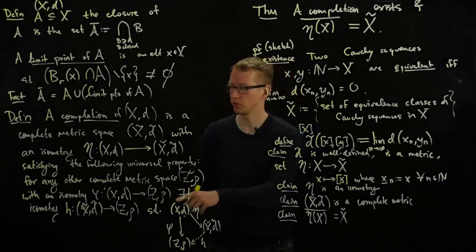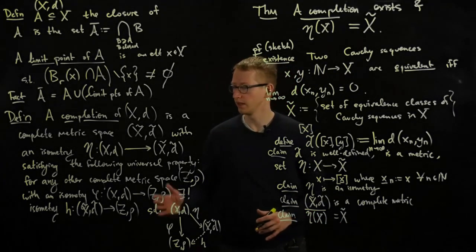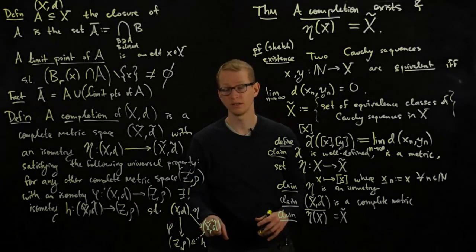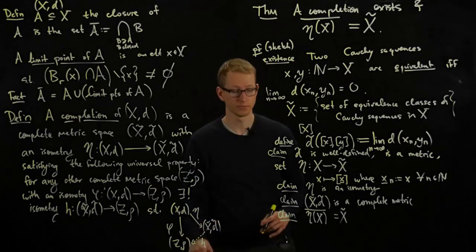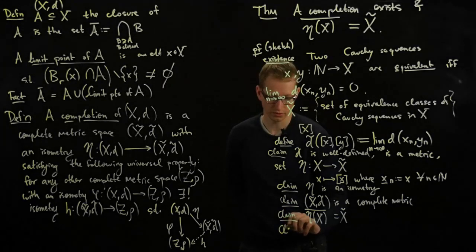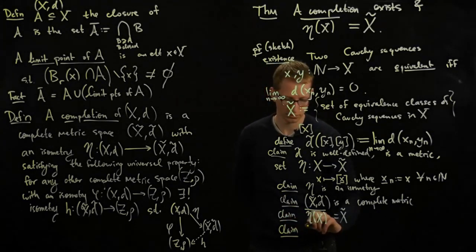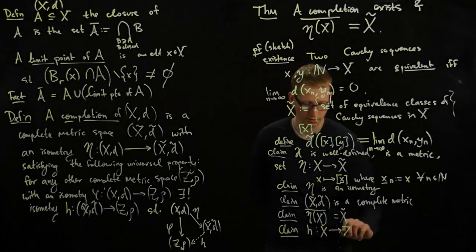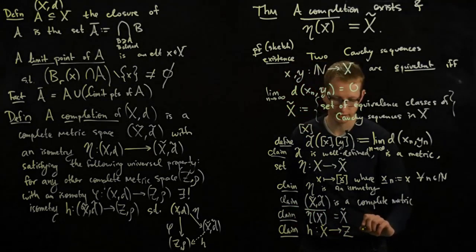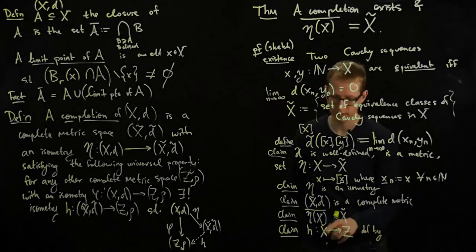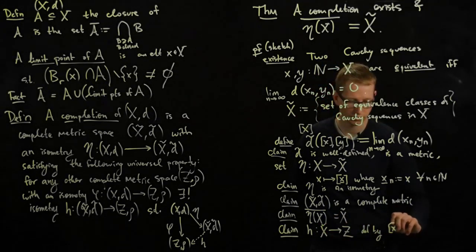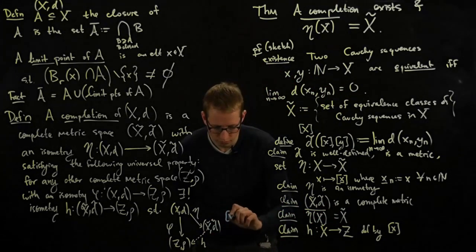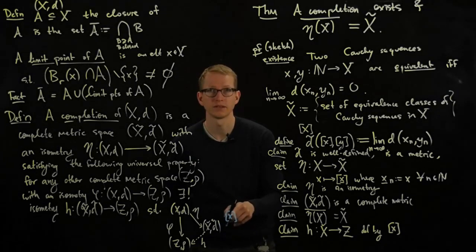And then you have to check this universal property. And the way you do that is, give me another complete metric space with such an isometry. What I have to do is show you that there exists a unique h that fits inside of this diagram. So another claim is that h, which is supposed to be defined as a function, let's check here, from x tilde to z, defined by sending any Cauchy sequence. So let's look at this diagram a little bit. Imagine I have a Cauchy sequence here. Here, this gives me a list of elements if I take an equivalence, if I take a representative.